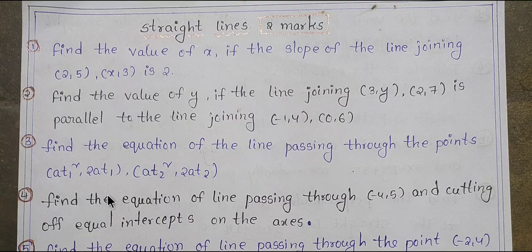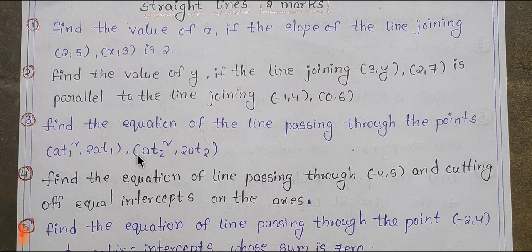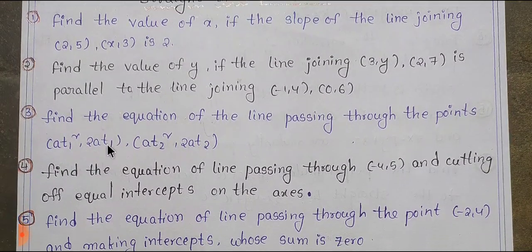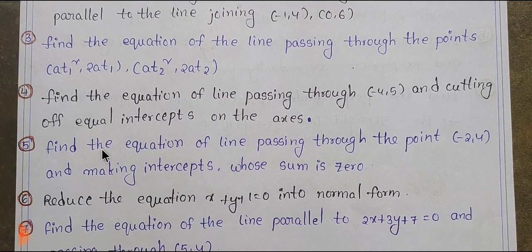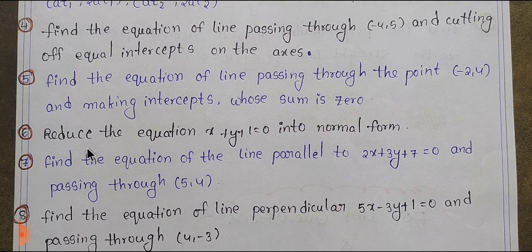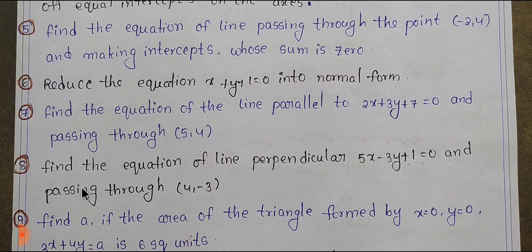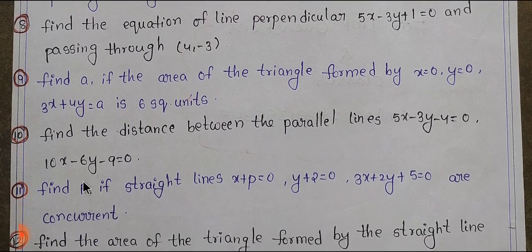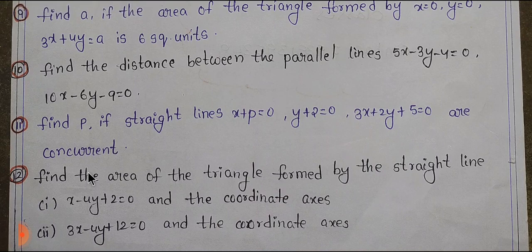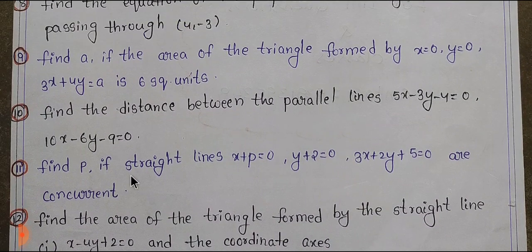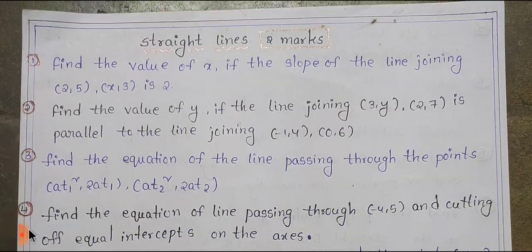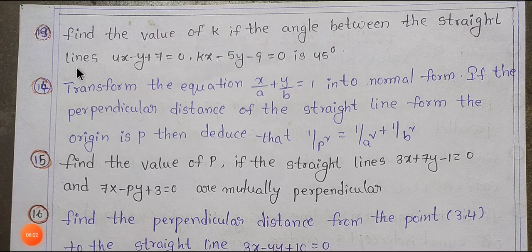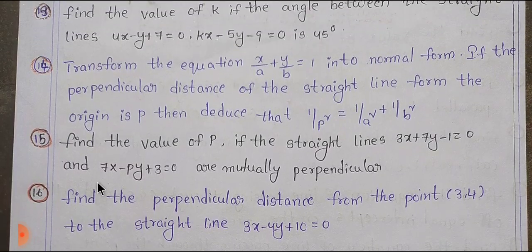In the next video, we will talk about straight lines. In straight lines, 2-mark problems are covered. There are 2-mark questions numbered 8, 9, 10, 11, 12 — these 2-mark problems are completed. Remaining 2-mark problems: 13, 14, 15, 16 — 16 marks completed.